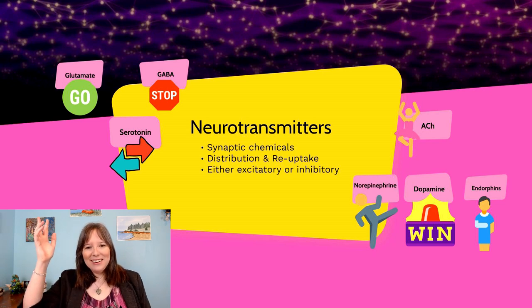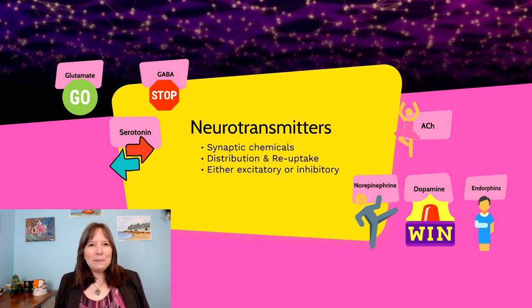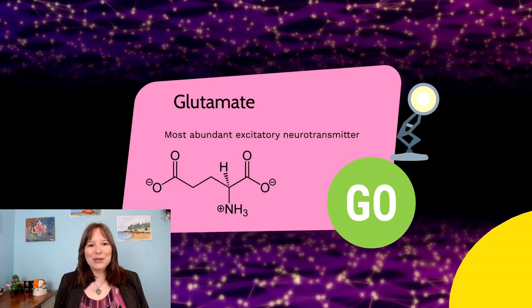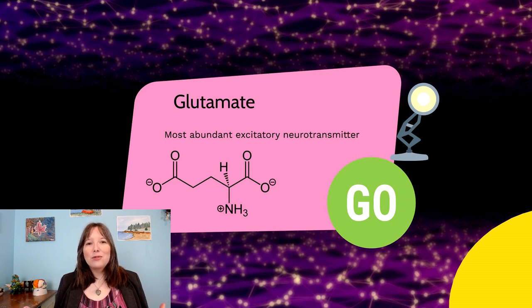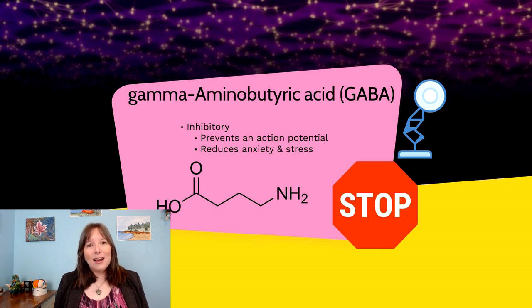We're going to give a couple of examples — not an exhaustive list, but some of the basic ones you'll hear a lot about in this course or in second-year psychology. One of the most prominent and prevalent neurotransmitters is glutamate. This is the most abundant excitatory neurotransmitter — really the go button. It helps with the structure and firing of the brain most and is present in many different circuits. Then we have one of the most prevalent inhibitory neurotransmitters — gamma-aminobutyric acid, or GABA. This is inhibitory and prevents an action potential.